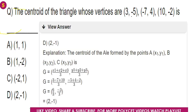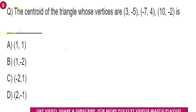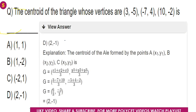Next problem: find the centroid of the triangle whose vertices are (3, minus 5), (minus 7, 4), and (10, minus 2). The centroid formula is: G equals (x1 plus x2 plus x3) by 3, (y1 plus y2 plus y3) by 3.